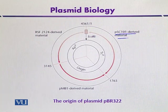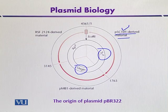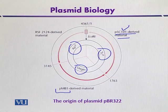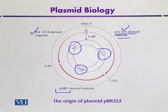So PBR322 is a chimeric molecule that contains different selectable markers and an origin of replication from different sources. Its tetracycline resistance gene is from PSC-101, its origin of replication that mediates independent replication from the host chromosome is from PMB-1, and its ampicillin resistance gene is from RSF2124, a derivative of CoL-E1. These different numbers indicate base pairs taken from different sources, and this numbering starts from the EcoR1 site.